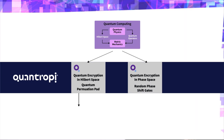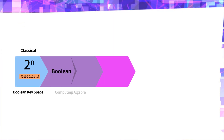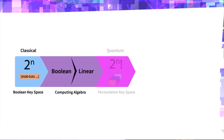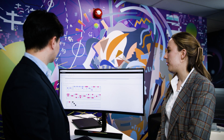Quantum B also developed random phase-shaped gates for optical infrastructure. These breakthroughs can be considered quantum vaccines for the quantum threat, or Y2Q problem. Quantum B developed its digital QPP platform called Kitspace for classical computers and QPP circuits for quantum computers.